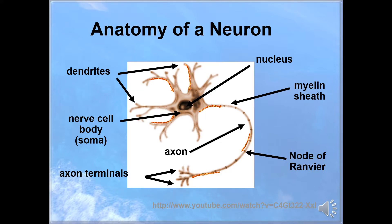Think of the dendrites as little hands that are picking up information and knowledge. The nerve cell processes it, then it moves the info on to the next little neuron.